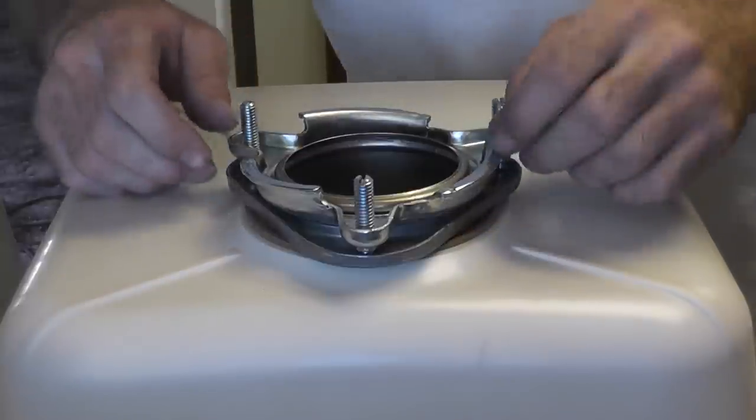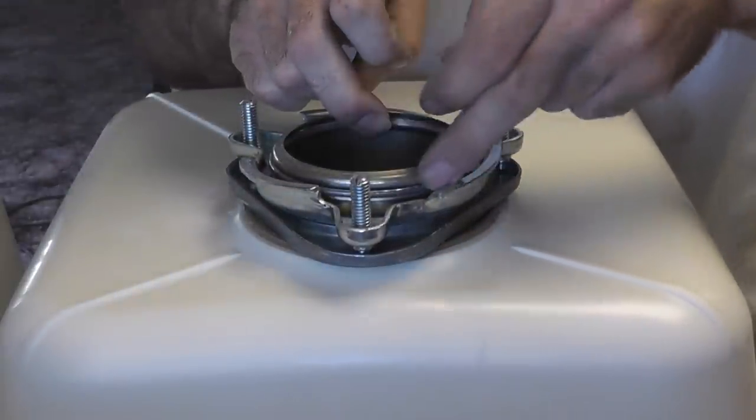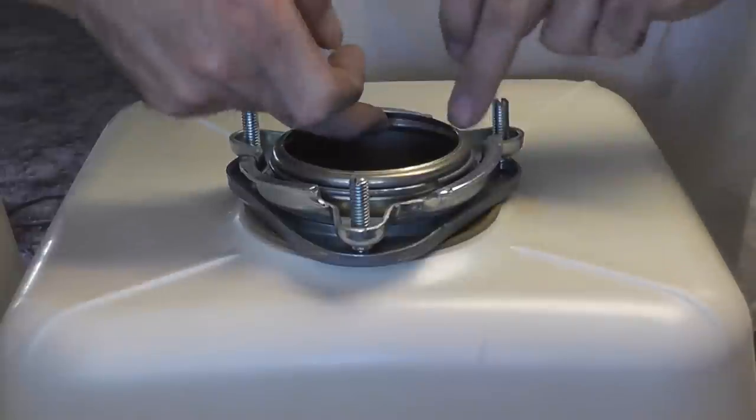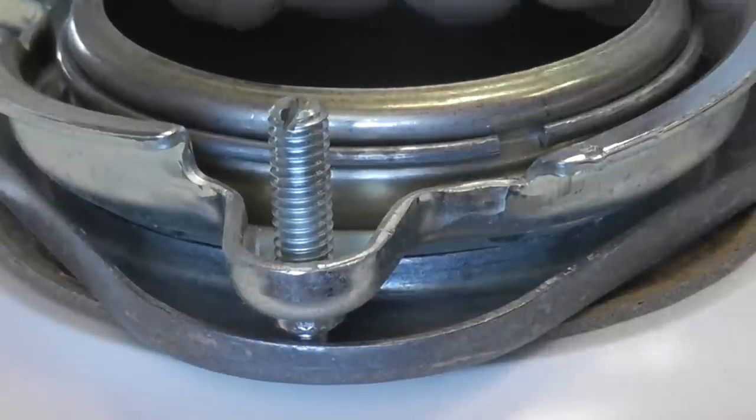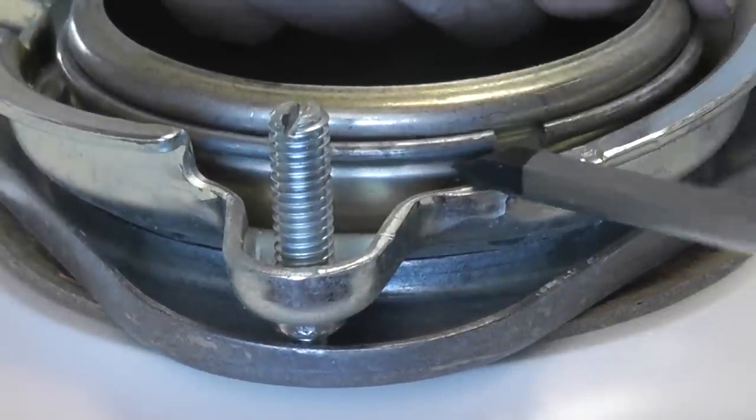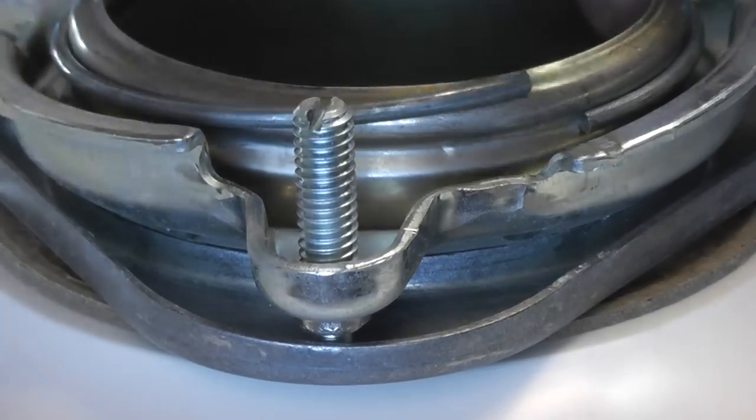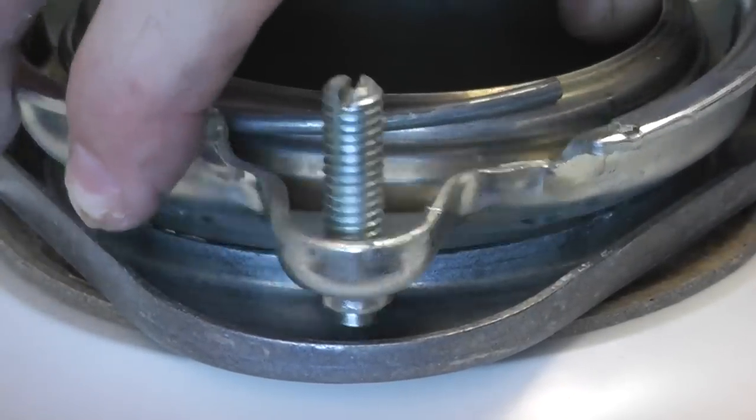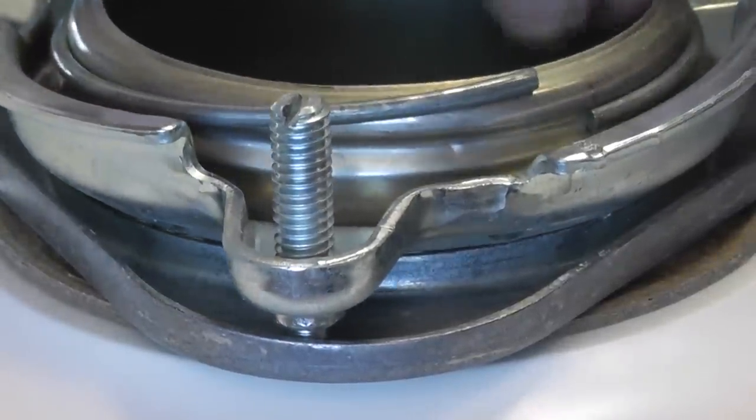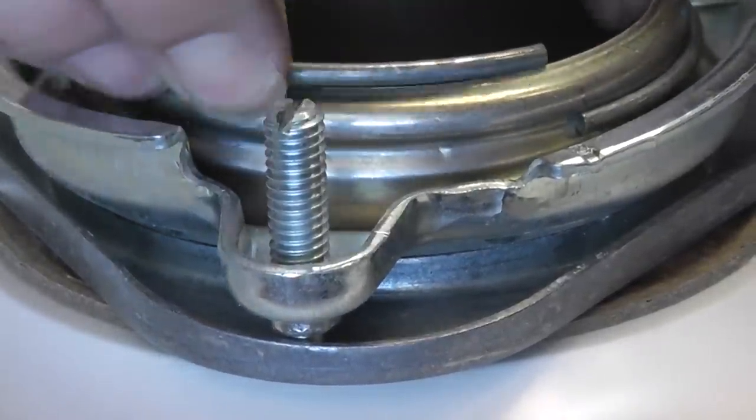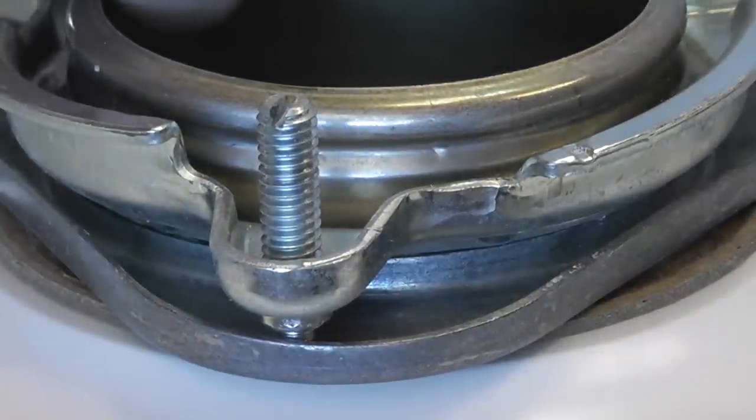Once these screws are loose, the next thing we need to do is remove this snap ring that goes around the circumference of this strainer. We'll just do this with a flat screwdriver. This snap ring makes it possible for this mounting plate to pull down on the sink strainer to hold it tight with the sink, so once we remove it, everything will just pull apart.